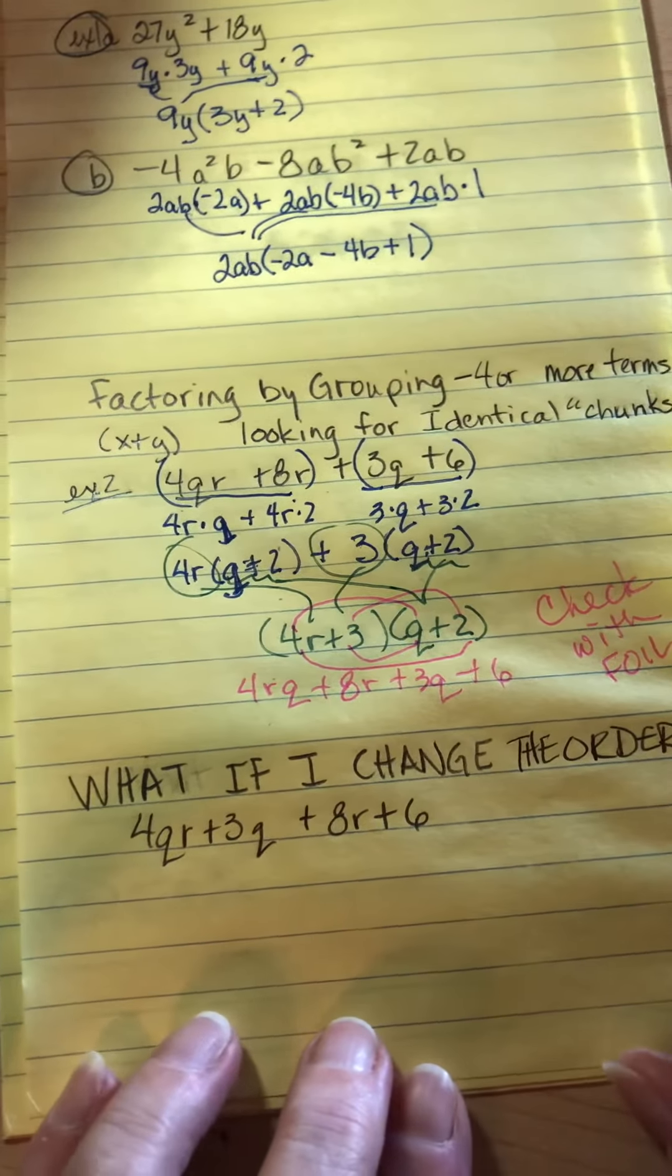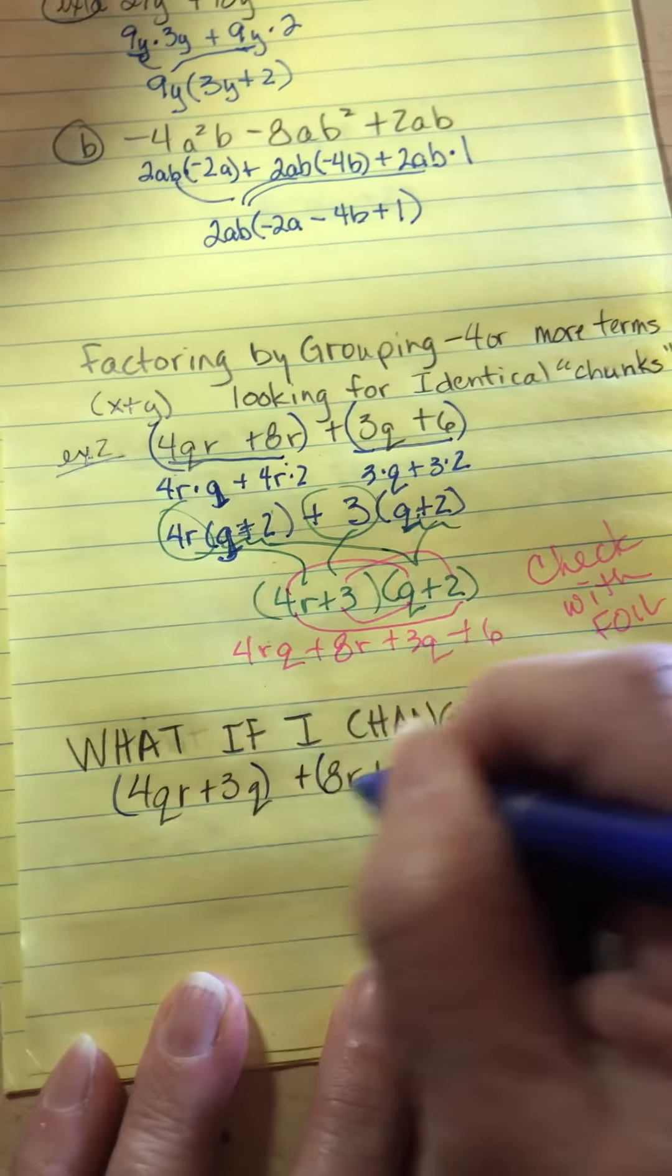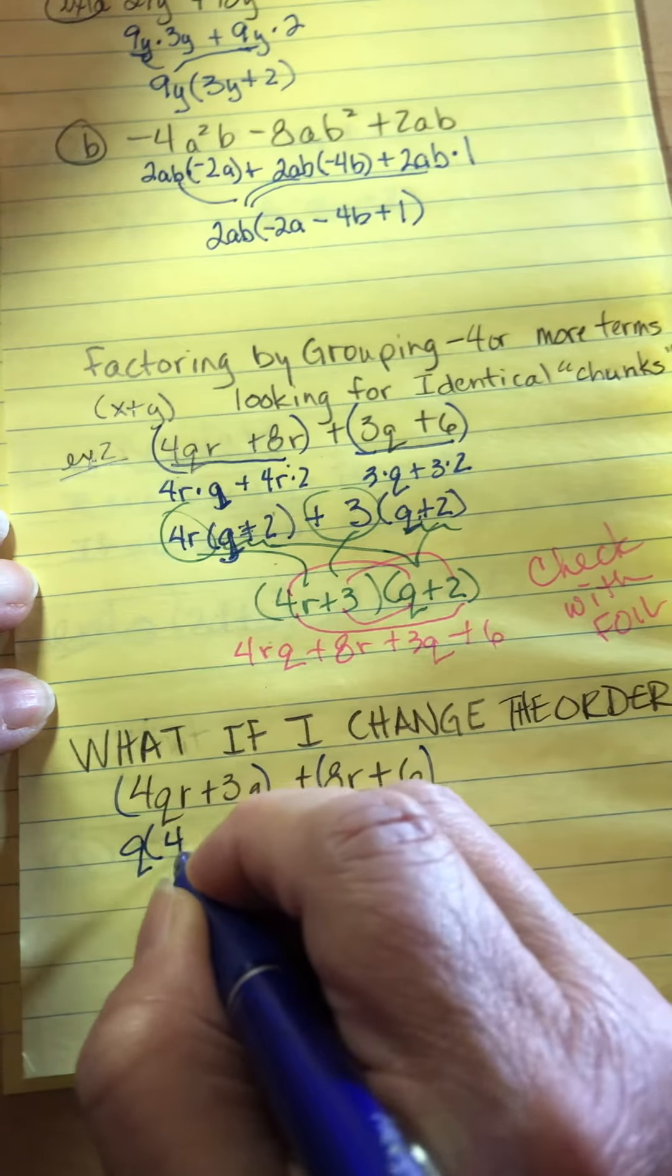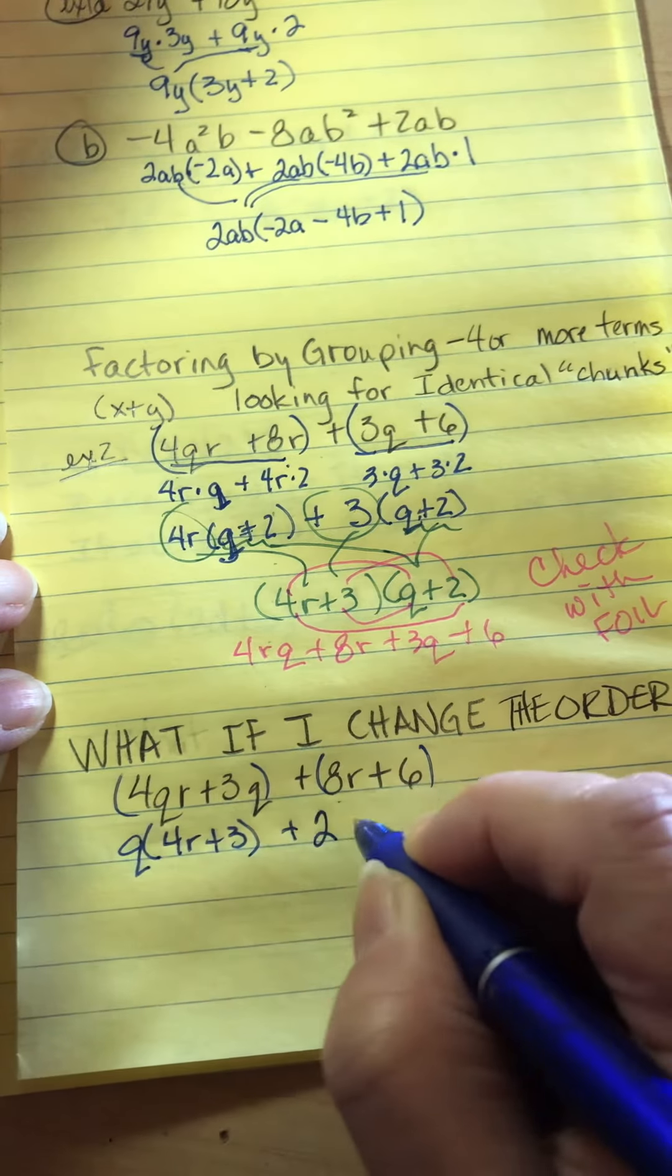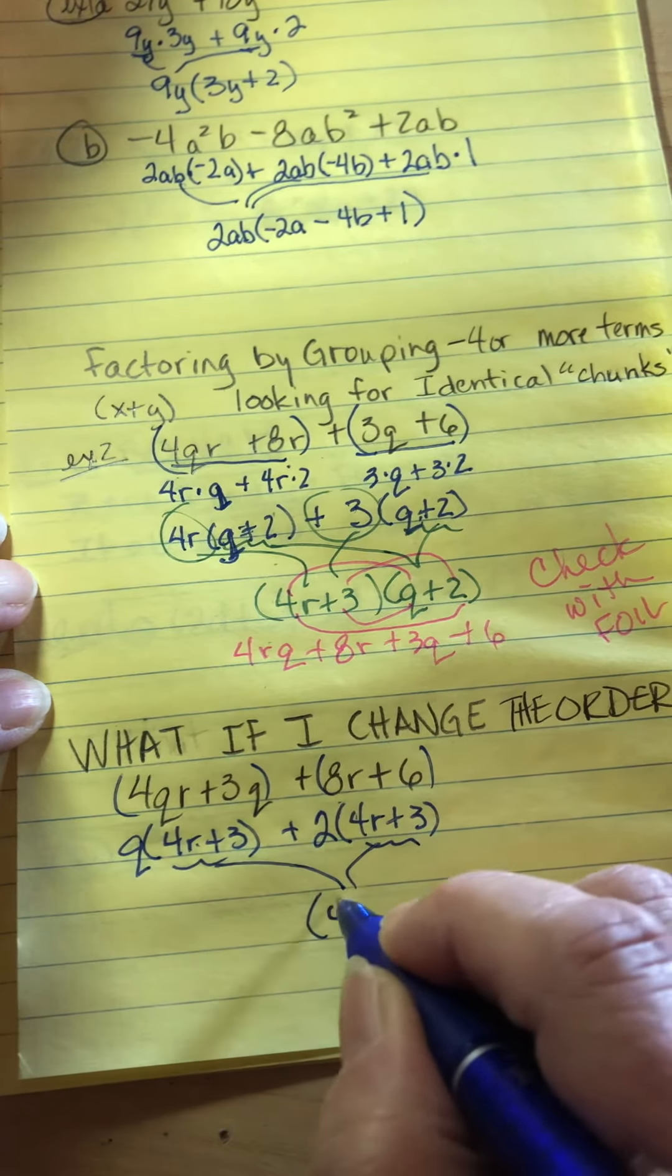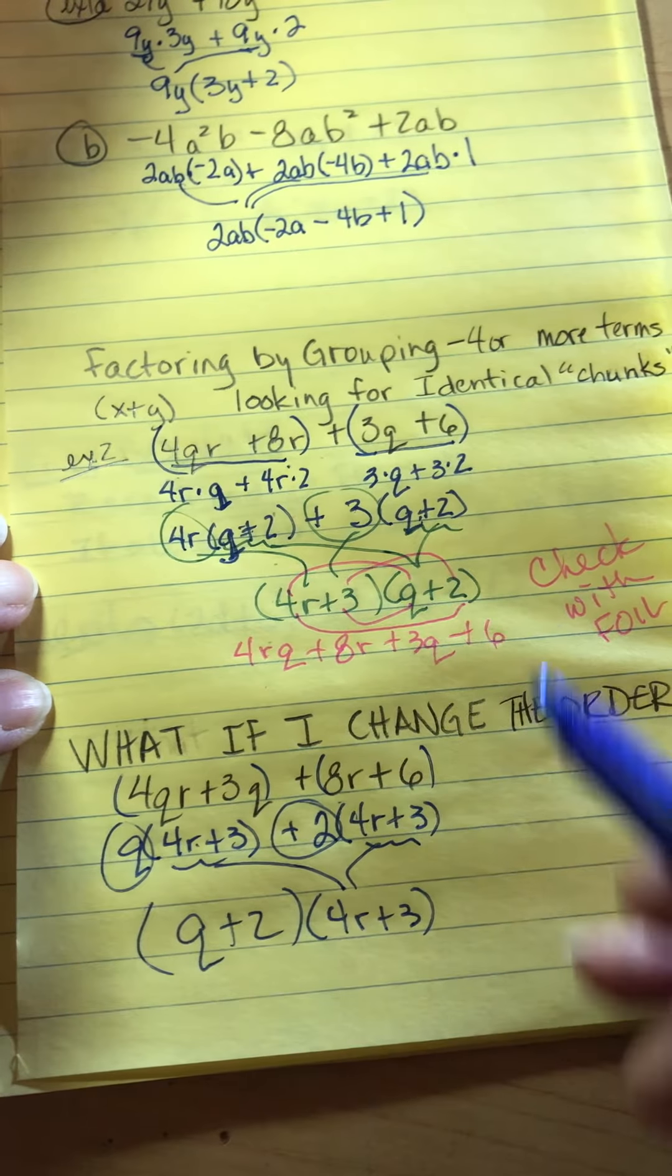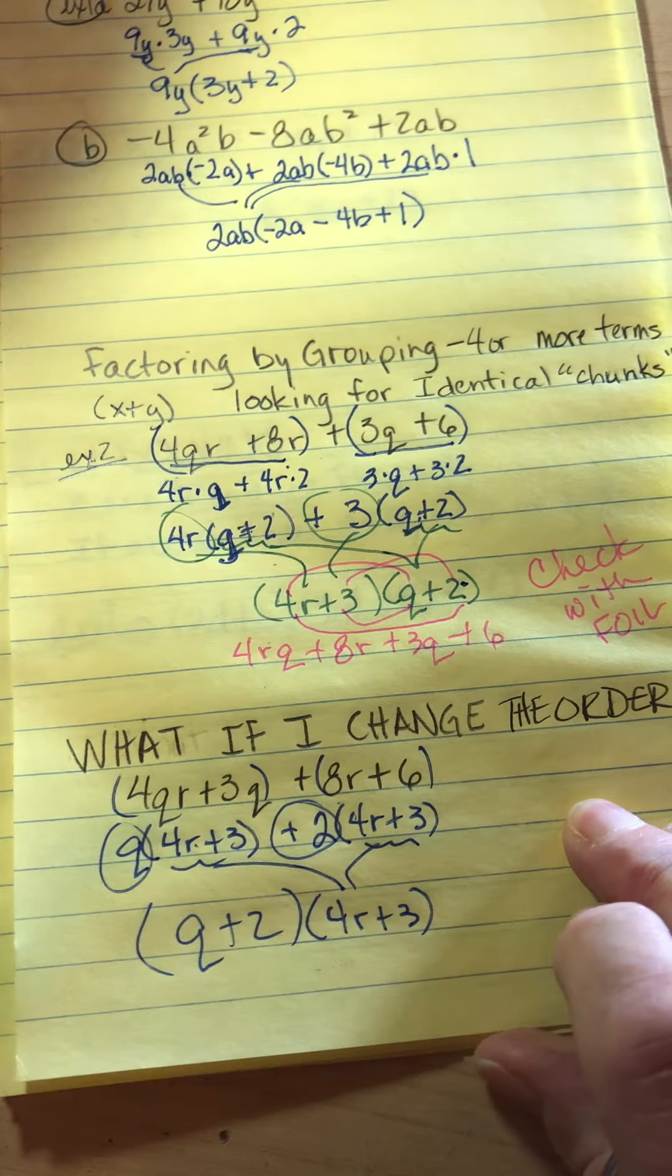What if I change the order? What if I want to put all the Qs together? Can I still do it? Of course. I'm just going to group them again in pairs. Here, all I can pull out is a Q, and I'll have 4R plus 3. Here, all I can pull out is a factor of 2, and I'm going to have 4R plus 3. That chunk has to be identical. This is my new GCF, so I've got to pull it out. And what do I have left? Q plus 2. Notice, that's the same thing as I got when I did it the other way. This is kind of like the prime factorization of that polynomial and the prime factorization of something is unique.